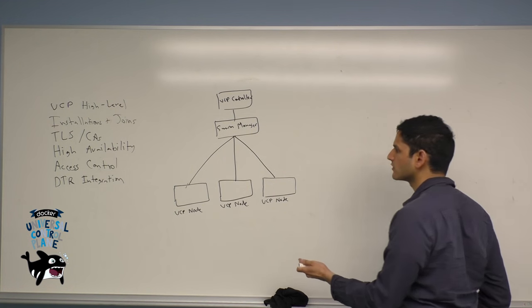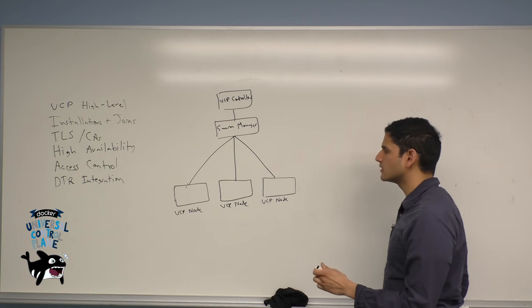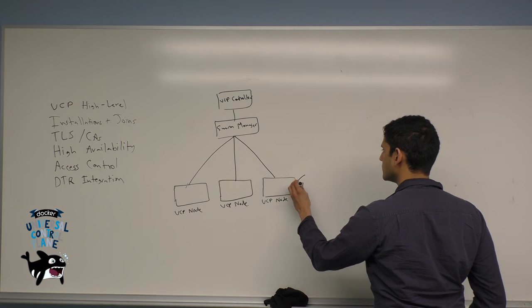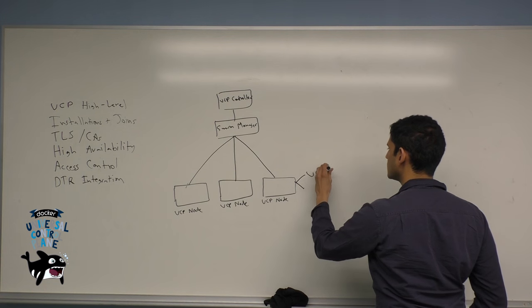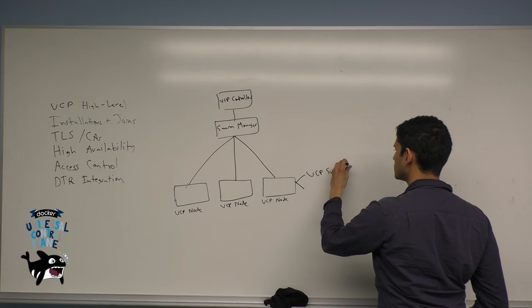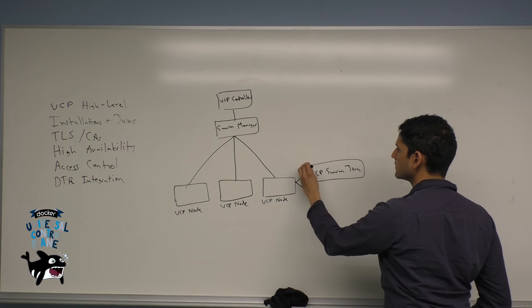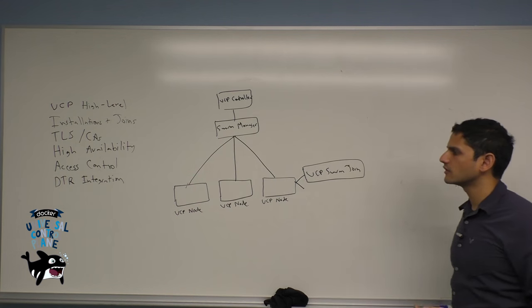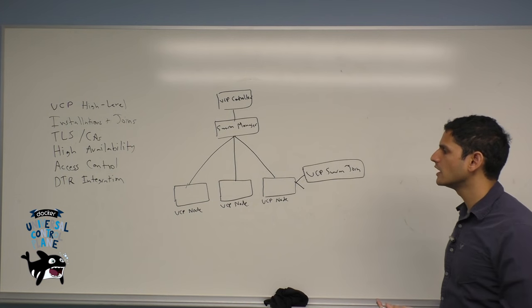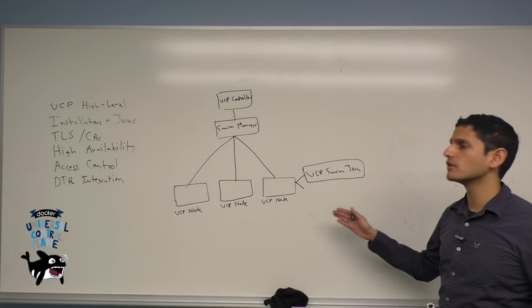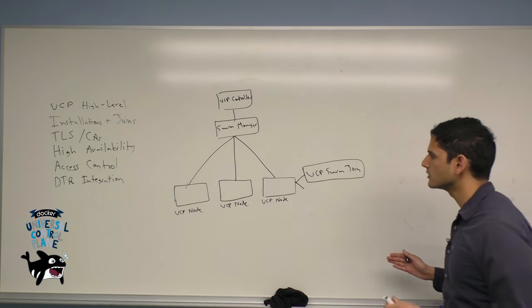Along with application containers, each UCP node contains two other containers. One is the UCP Swarm Join container. As in a standard open source Swarm deployment, this is the container that provides a heartbeat mechanism to Swarm Manager and ensures that if the node goes down for whatever reason, the Swarm Manager knows not to schedule on this particular node.